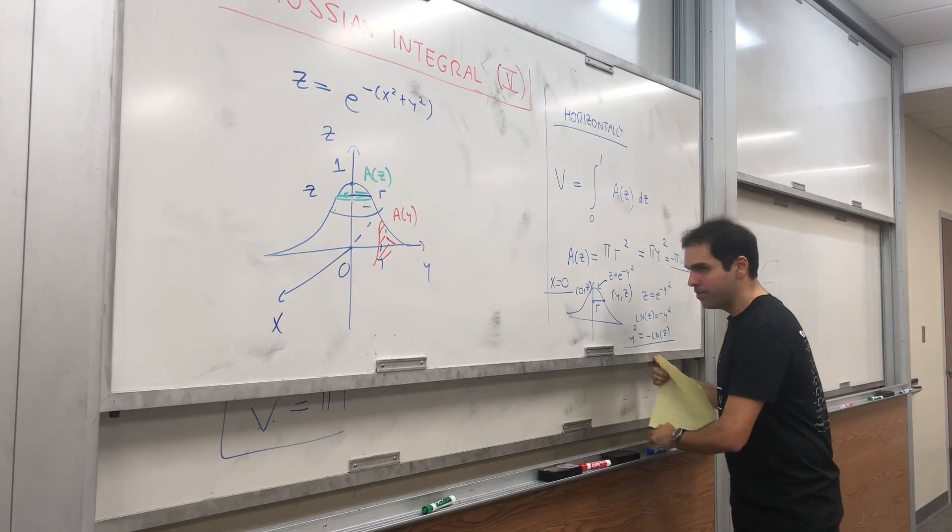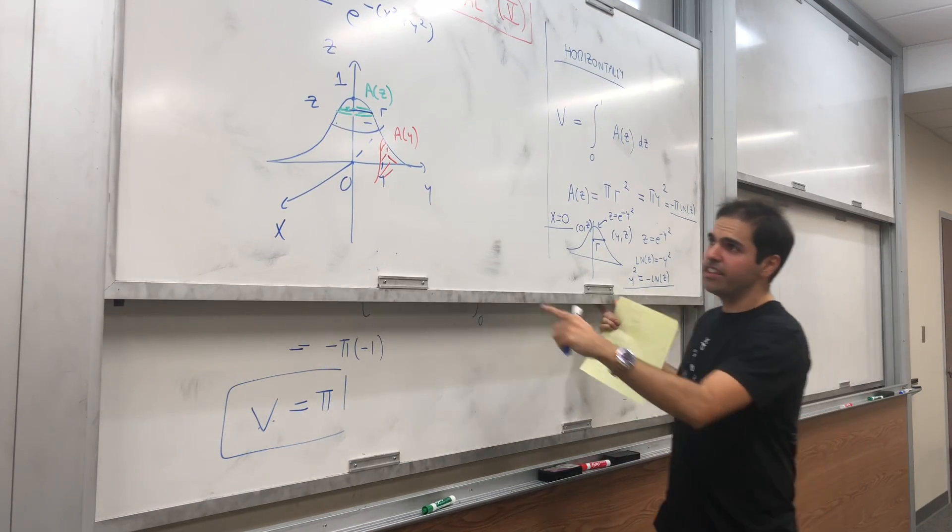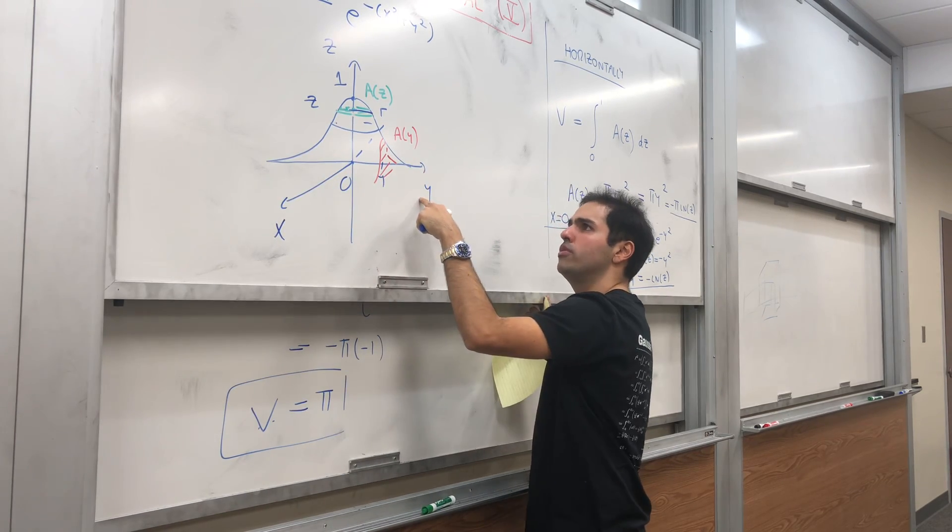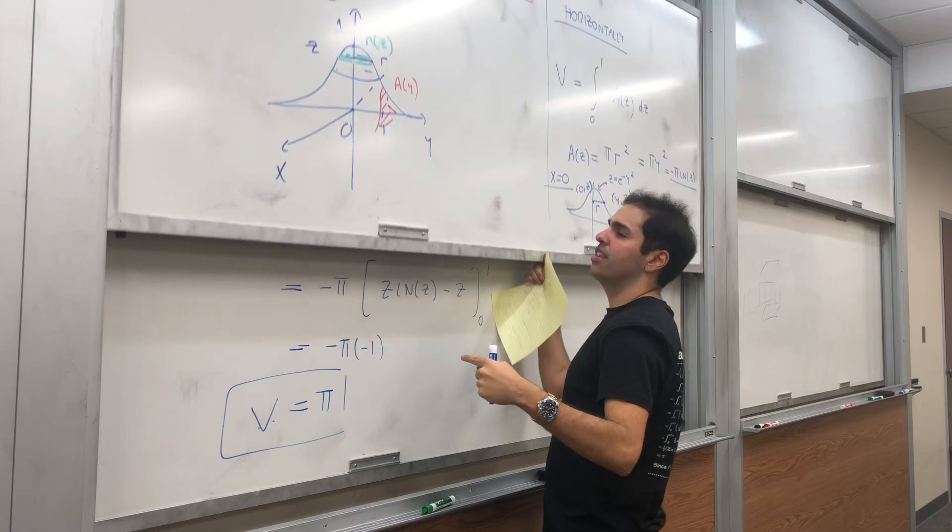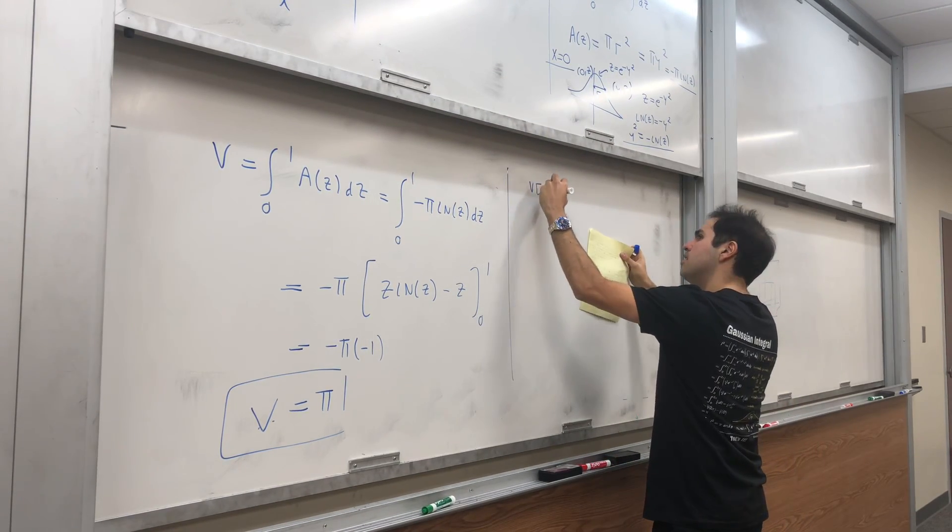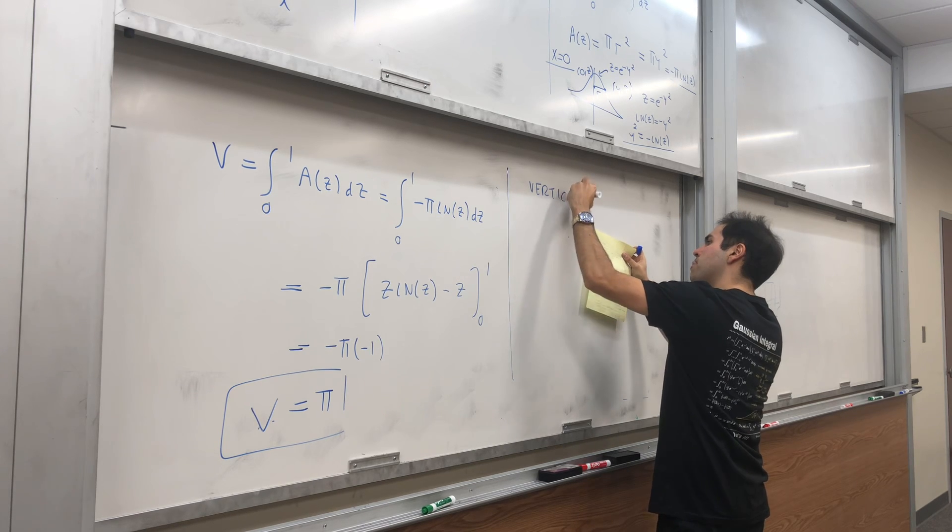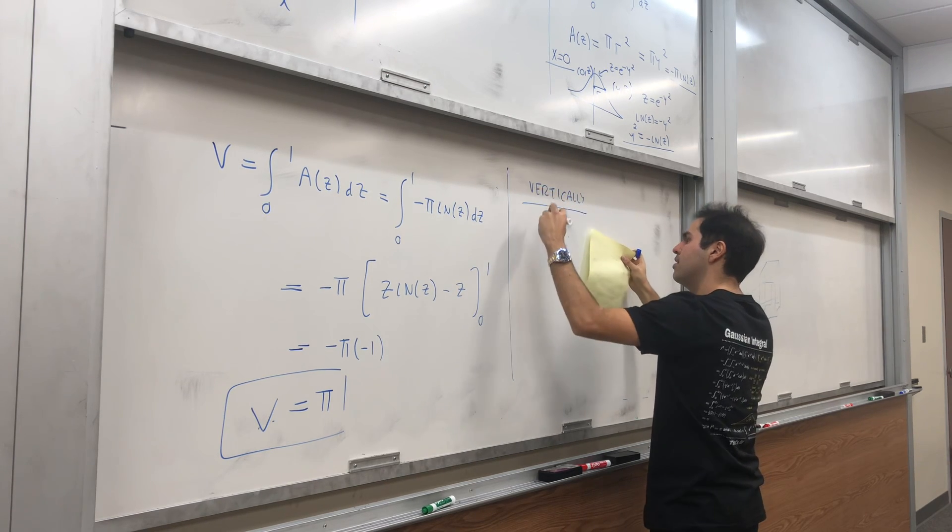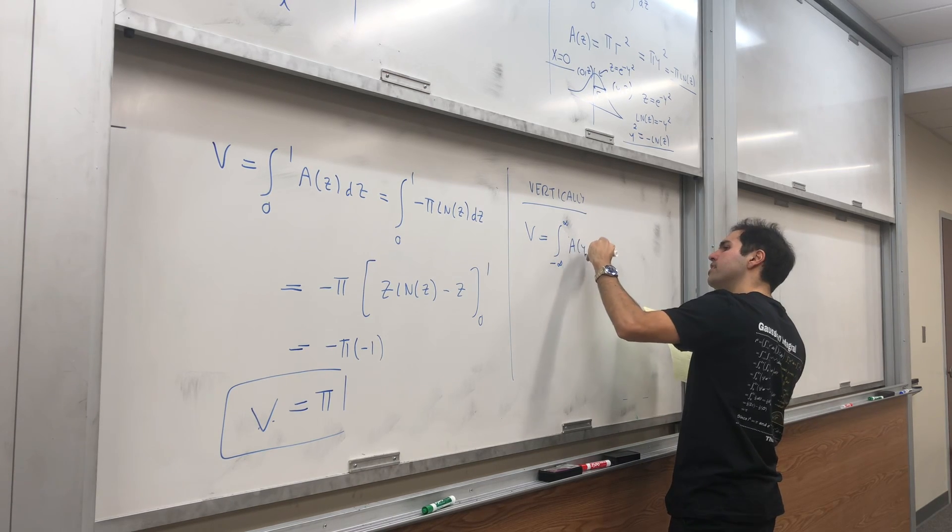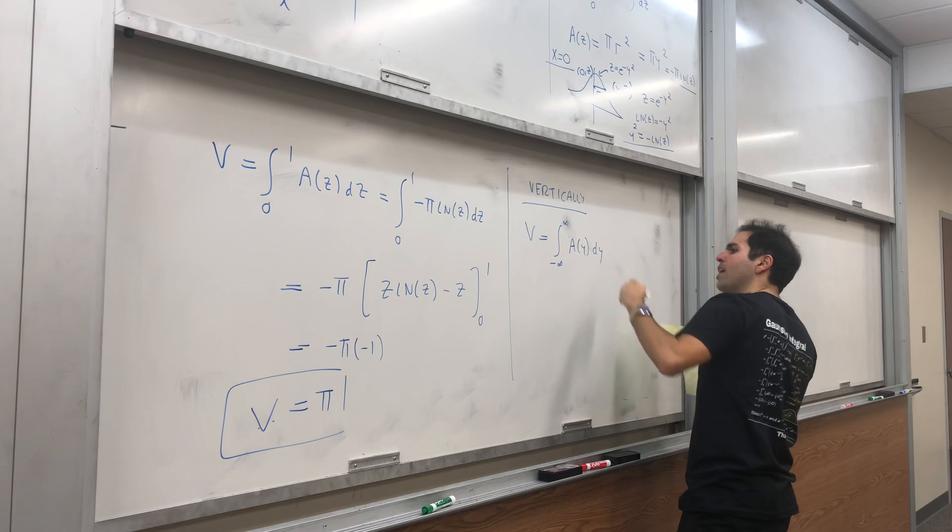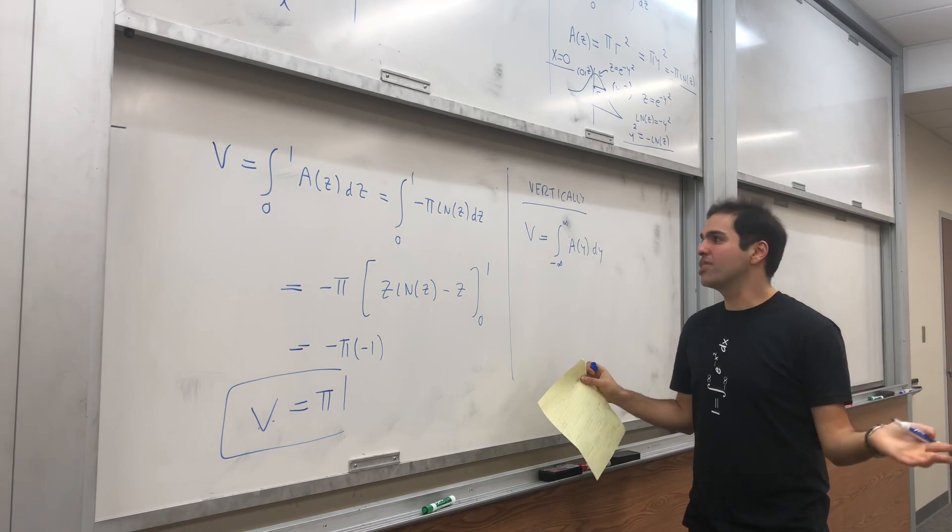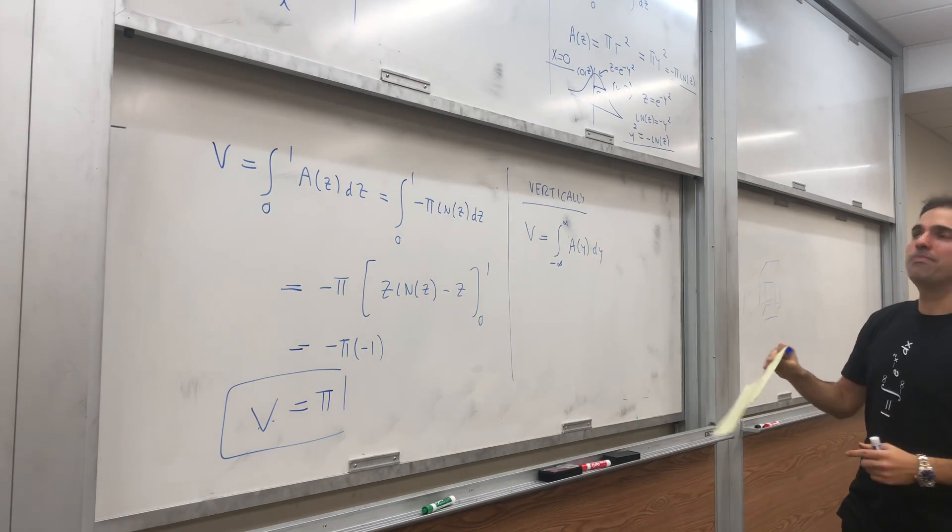Vertically, the volume becomes the integral from -∞ to ∞ of A(y) dy. And notice, so far there is no Gaussian integral yet, but it'll appear now.